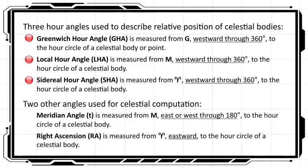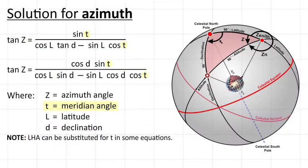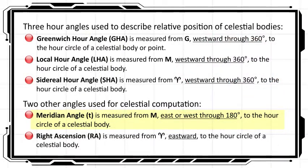Two other angles, the meridian angle and the right ascension, may be required for some celestial navigation computations. The meridian angle, labeled lowercase t, is used in some sight reduction formulas. The angle t is measured from M east or west through 180 degrees, depending on proximity, to the hour circle of a celestial body and labeled accordingly to indicate direction from M.